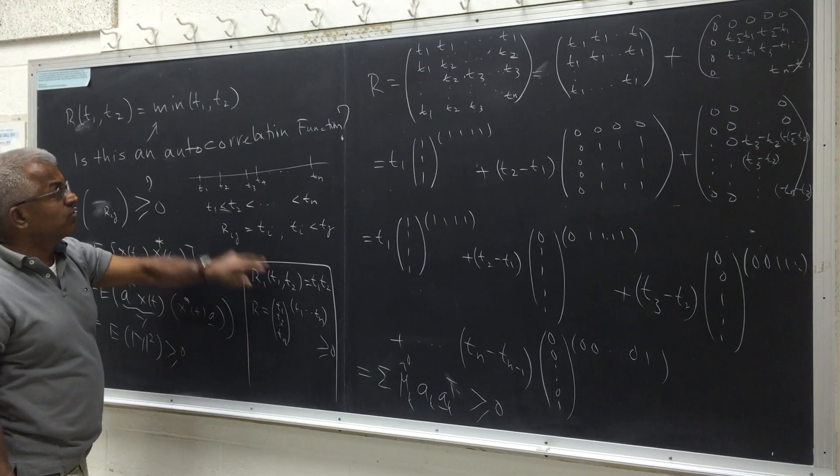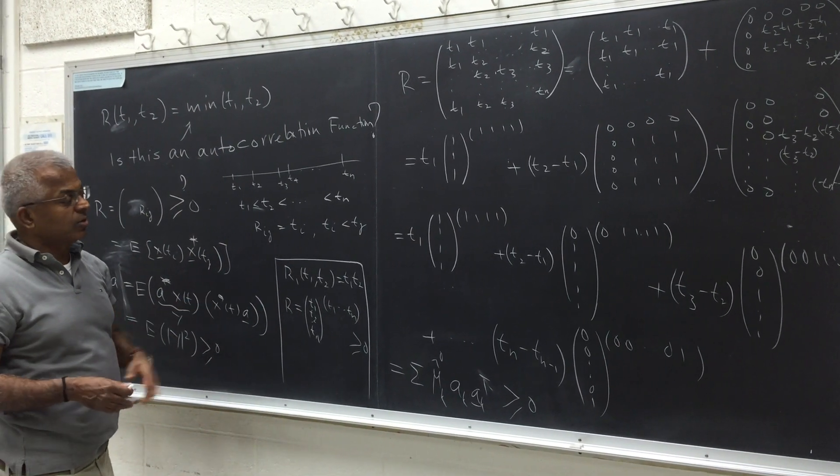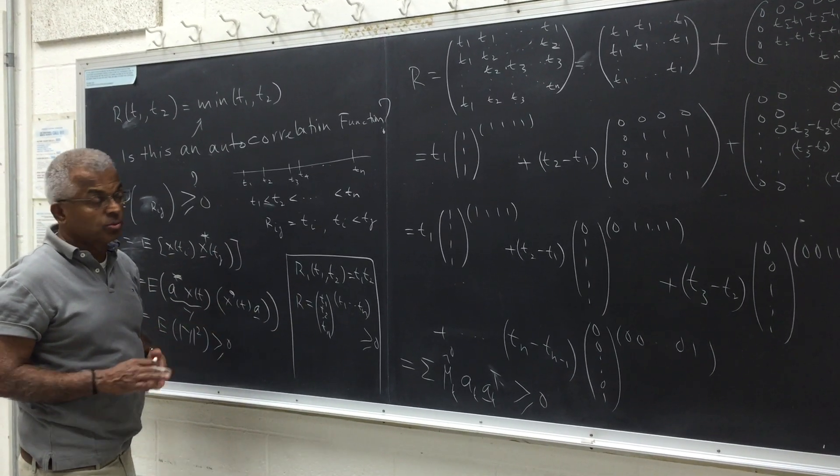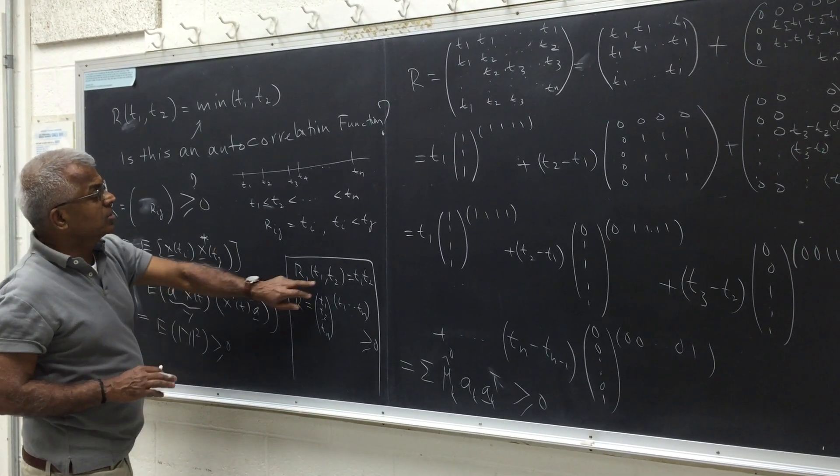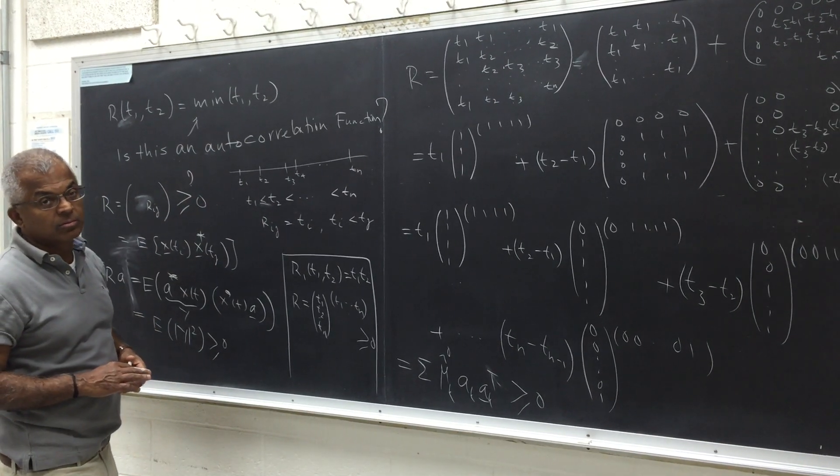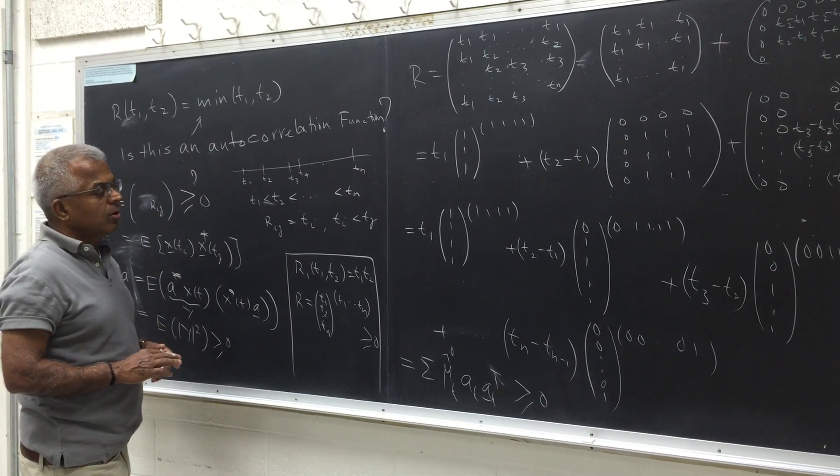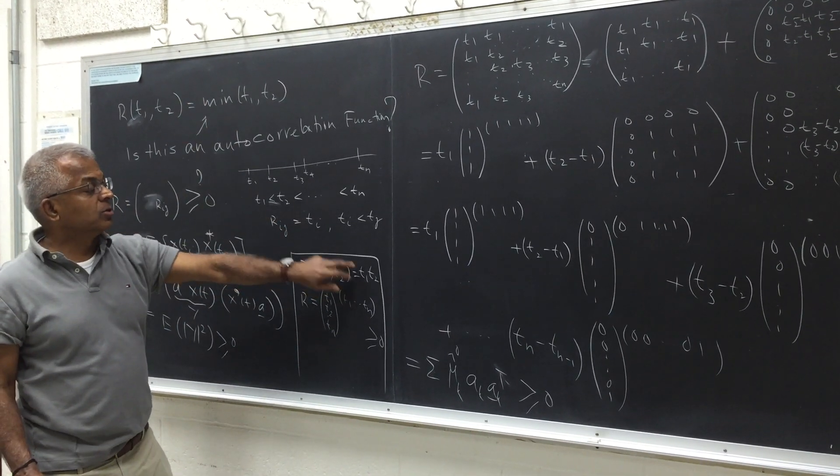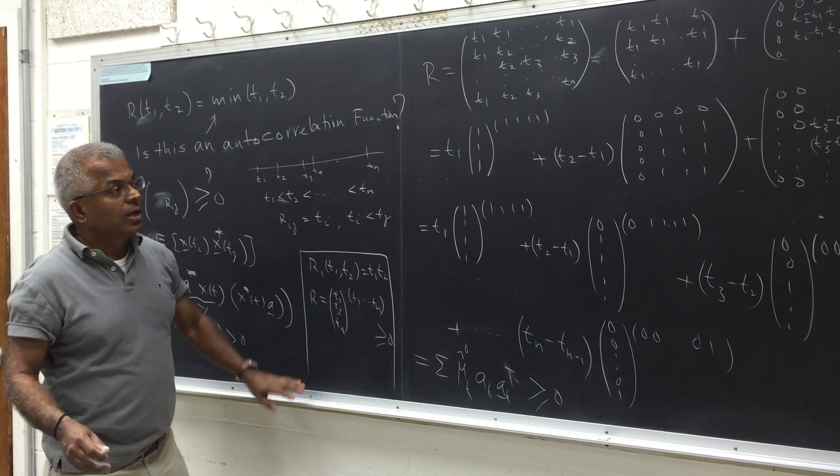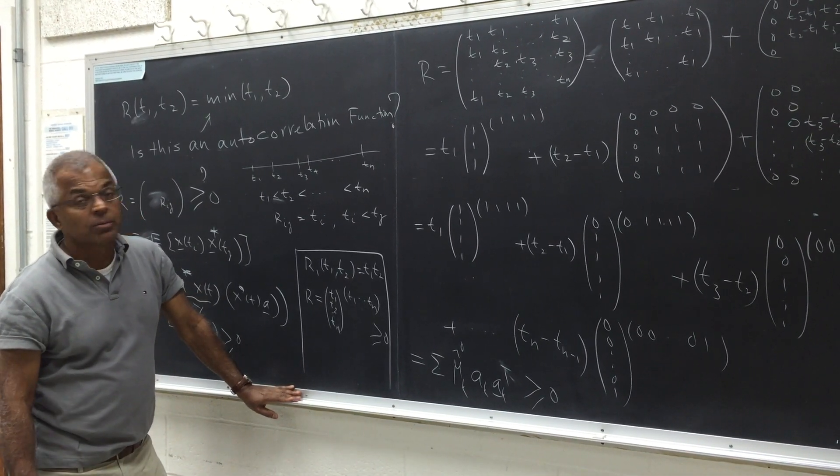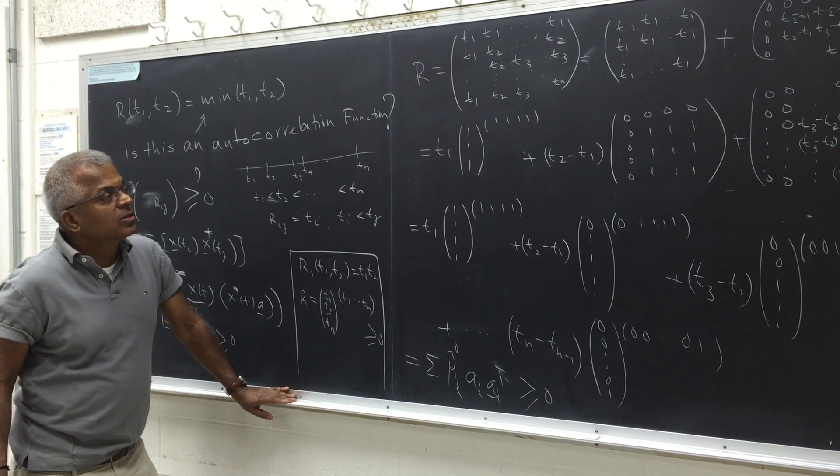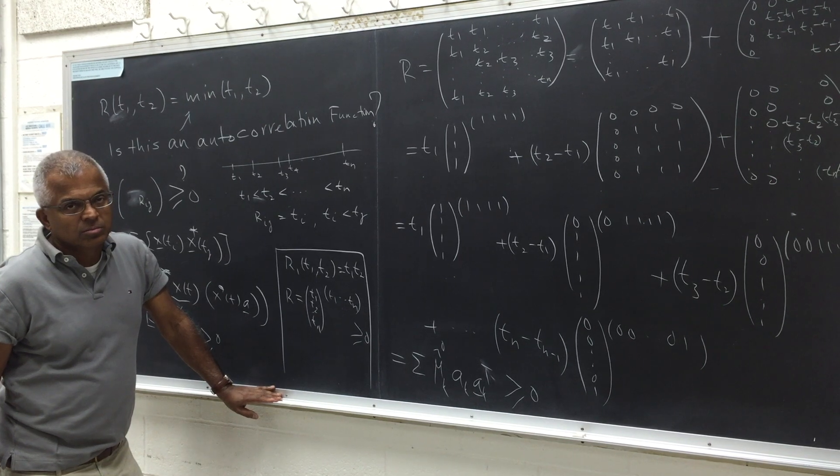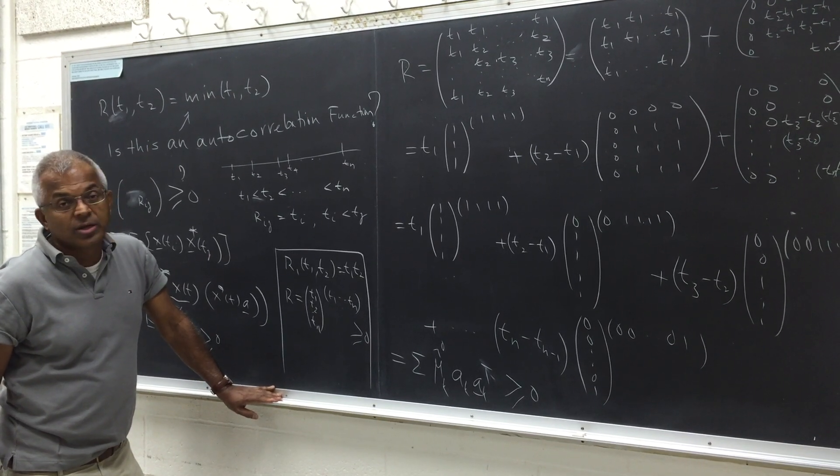This is an autocorrelation function. Sum of two autocorrelation functions is of course the sum of two stochastic processes with these autocorrelation functions which are uncorrelated. But the sum of this plus this we know is a Poisson, corresponds to the autocorrelation function of a Poisson process if you multiply by lambda squared here and lambda here. And so all this is established purely using just a very simple matrix results or non-negative definite matrices.